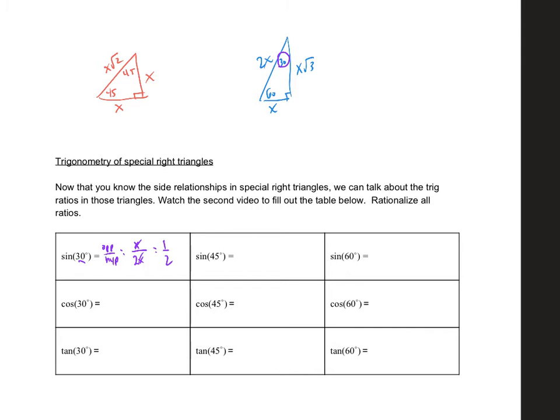So let's do the sine of 45°. Again, we find a 45-degree angle, which is in this triangle. Sine is opposite over hypotenuse. So the opposite side is x and the hypotenuse is x√2. The x's cancel, and we end up with 1/√2.